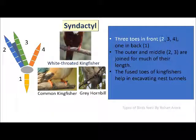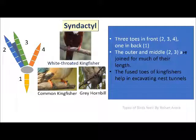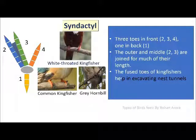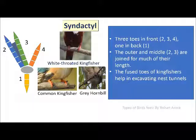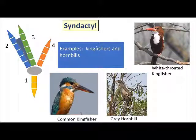Syndactyl is a foot arrangement in which three toes, marked as 2, 3 and 4, are in the front and one is at the back. Digits 2 and 3 are joined for much of their length. They are fused in kingfishers, which helps them in digging nest tunnels. Syndactyl arrangement is found in kingfishers and hornbills.